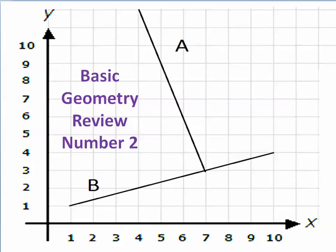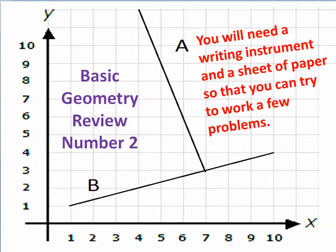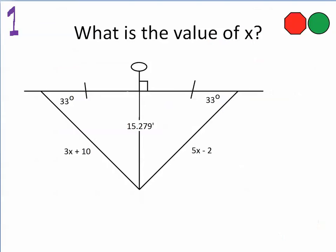We're going to take a look at some basic geometry review number two. You will need a writing instrument and a sheet of paper so that you can try to work a few of the problems yourself. Look at this depiction, this graphic, and see what you know about it. Click on the stop sign and see if you can figure out the value of x. When you think you've figured it out, click on the go sign and come back to find out how it worked out.